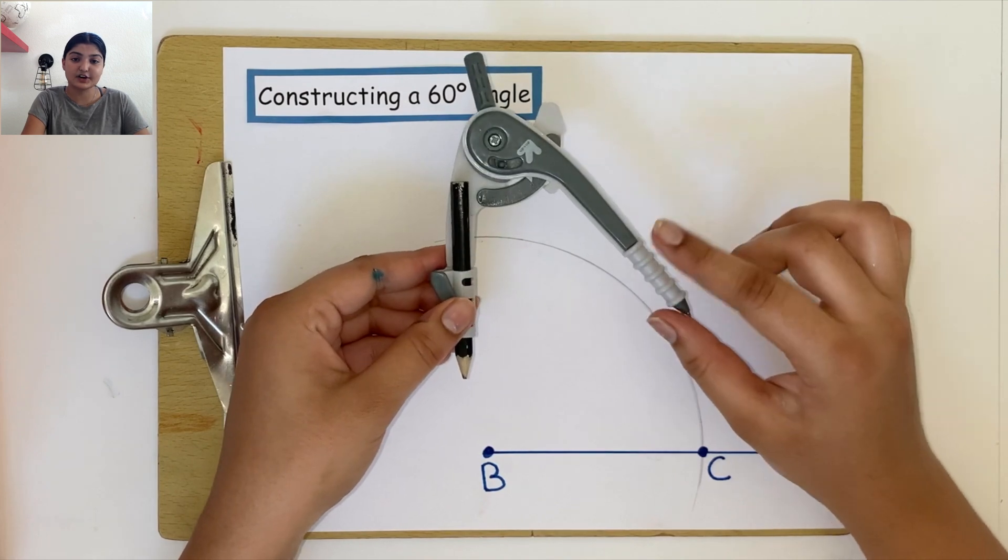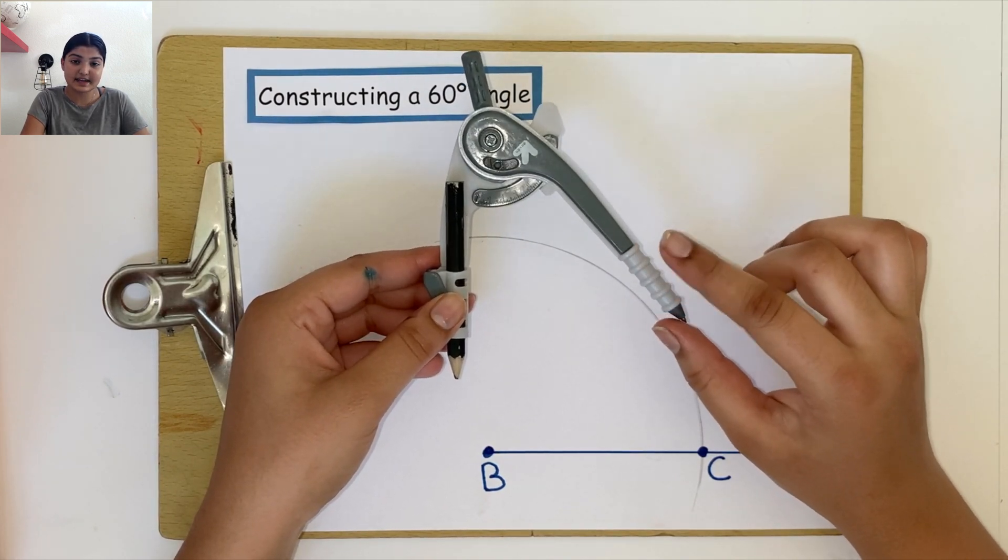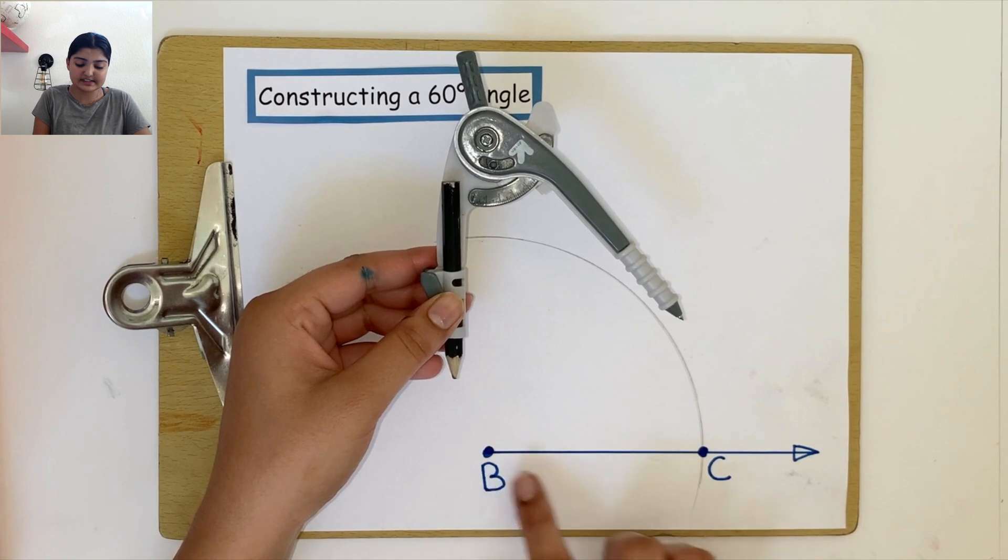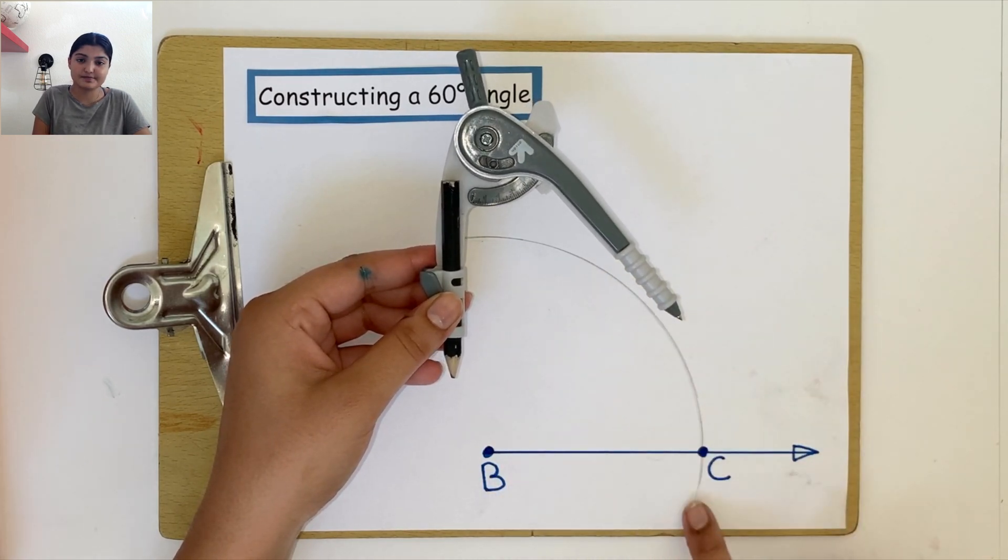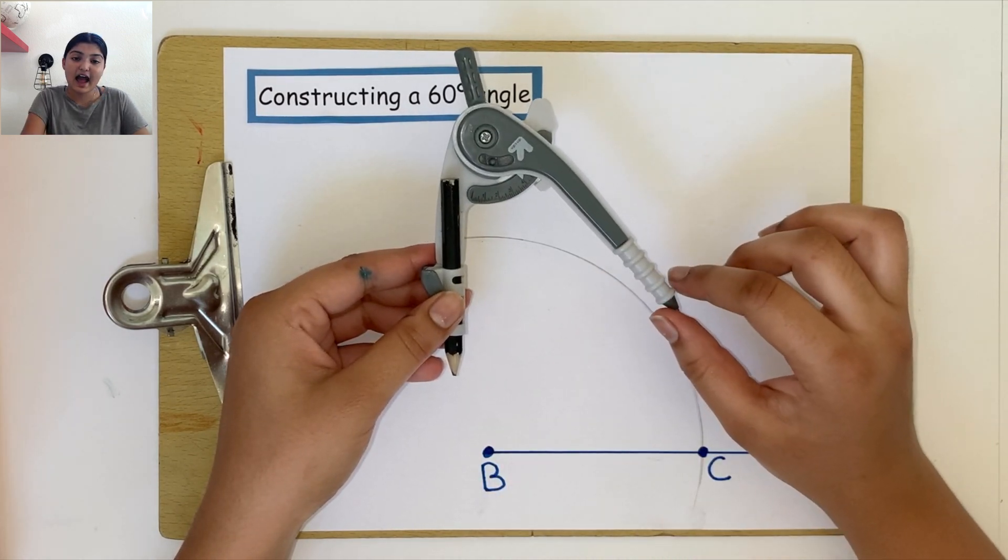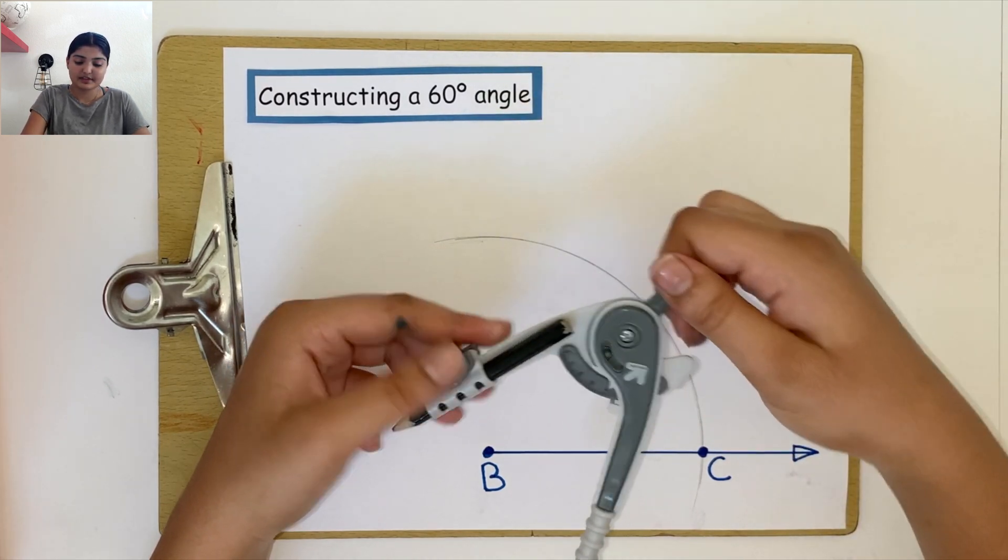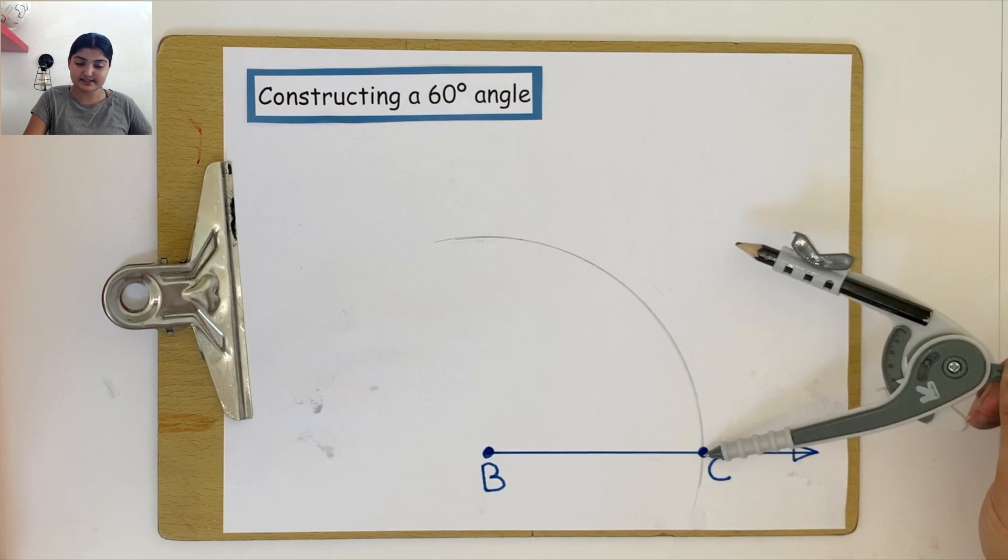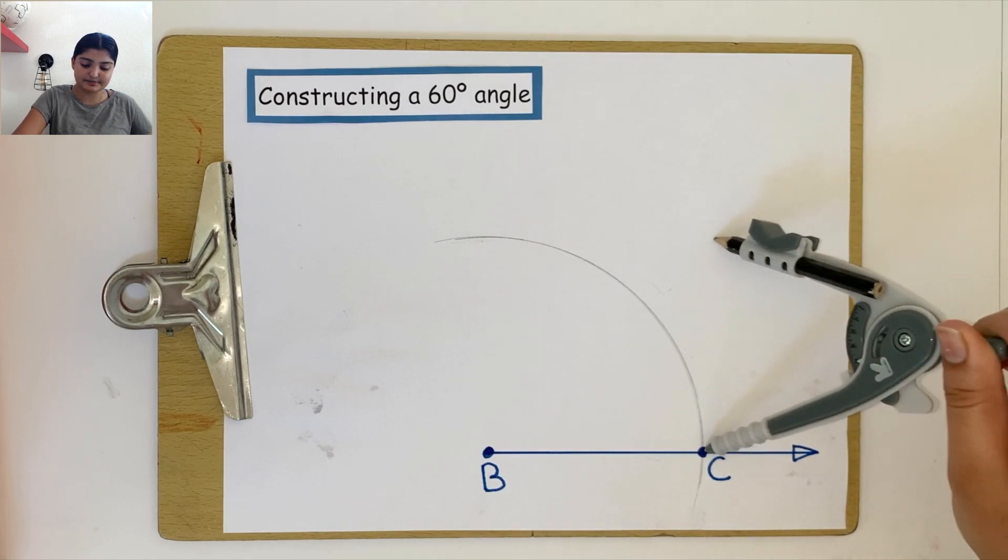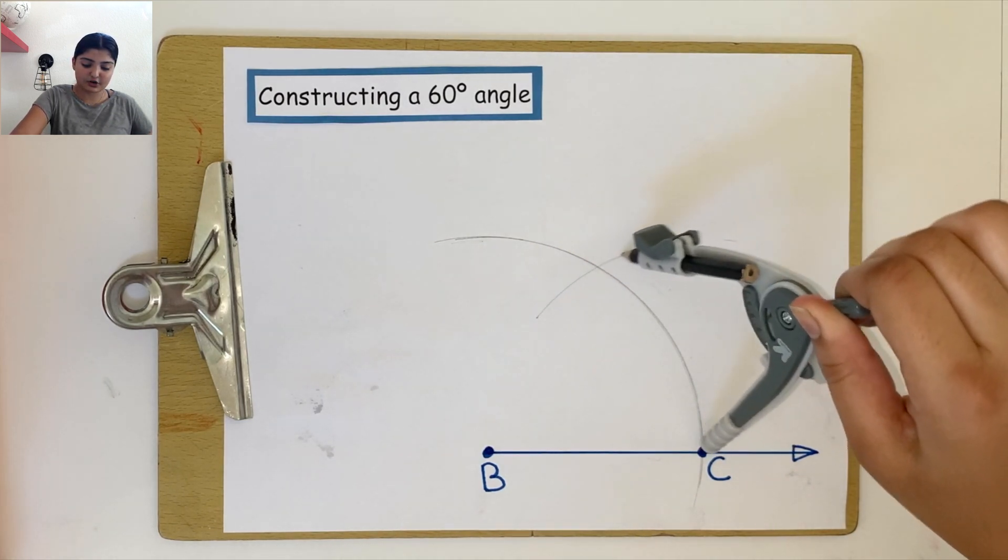Next, take your compass and keep the same distance as we did to make this arc. So here, I'll keep my compass at around 4 inches. Place the point of your compass on point C and make another arc.